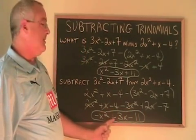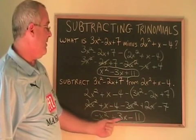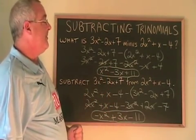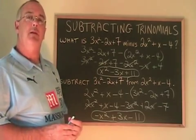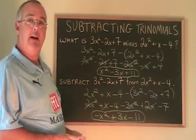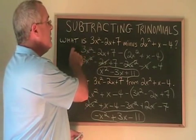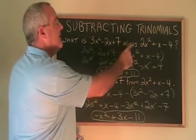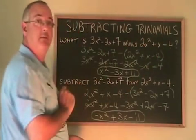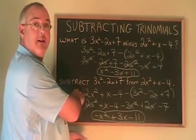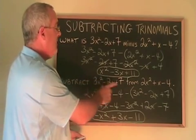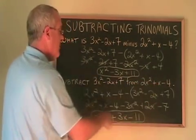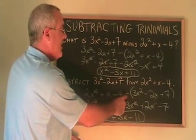Notice how the answer is the same except all three of the terms have the opposite sign from the way they did up here. So, the difference between these two questions is really in how they are asked. The first question asks you to take this first trinomial and then subtract the second trinomial. The second question is a little tricky. It says subtract the first trinomial from the second. You have to take the second trinomial and then subtract the first one.